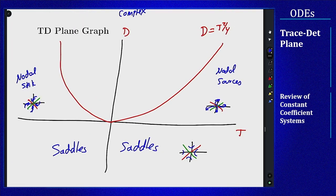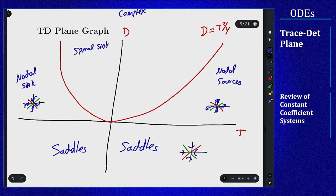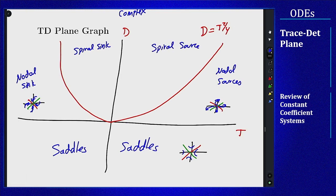Now jumping inside the parabola, going above it, we again have three options: if the trace is negative, zero, or positive. If the trace is negative, that's a spiral sink. If the trace is positive I get a spiral source, and if it's zero, so if we're on that axis, I get a center. Again I'm going to add in little pictures for those three.